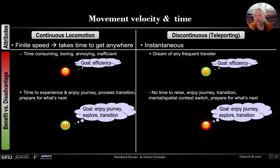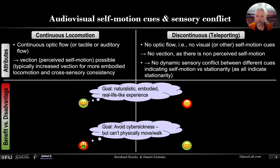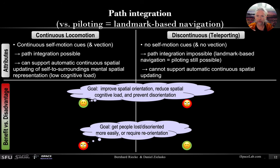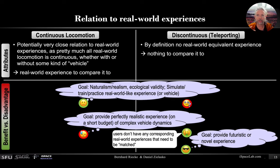I propose to distinguish between the actual attributes and what they mean. Whether something is a benefit or disadvantage really depends on your goal. We have lots of other examples of this — for effort, path integration, and so on.